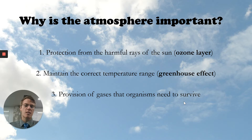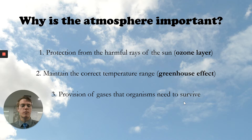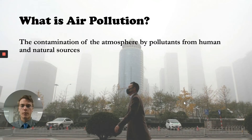The third thing I'm adding is the provision of gases that organisms need to survive. Humans need oxygen, and plants need carbon dioxide. Some of these gases are essential to the life of organisms on Earth, which makes the atmosphere so important. So what is air pollution? Air pollution is the contamination of the atmosphere by pollutants from human and natural sources.